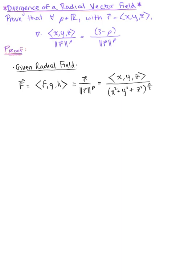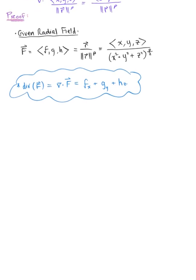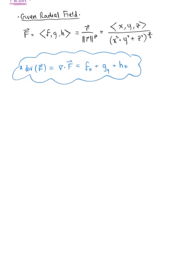We need to compute the divergence of this radial field. Keeping in mind, we recall that the divergence of a vector field in general is defined as the dot product of the del operator with the vector field. This is equal to the sum of the partial derivatives: the partial derivative of f with respect to x, plus the partial derivative of g with respect to y, plus the partial derivative of h with respect to z. We'll begin by thinking about this component by component, finding the individual partial derivatives for each component.